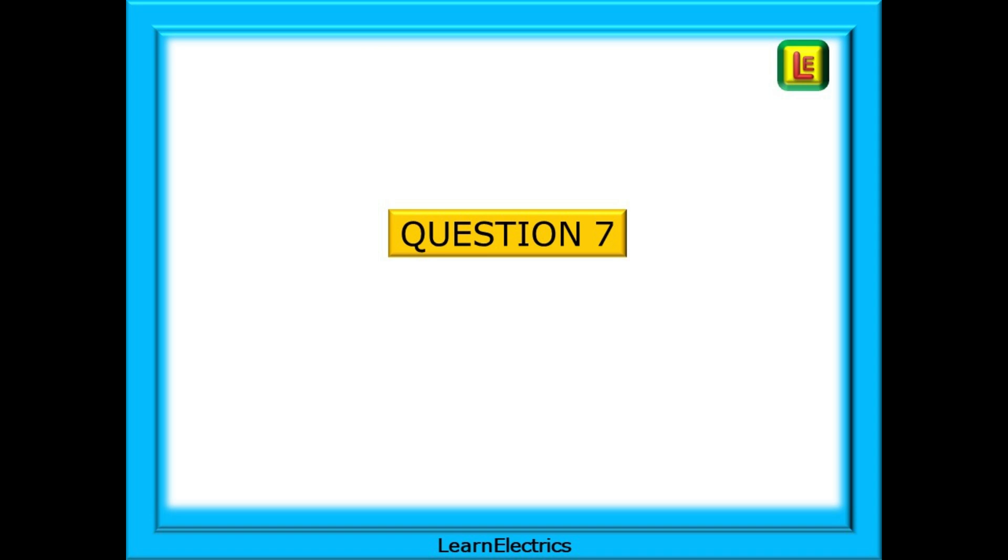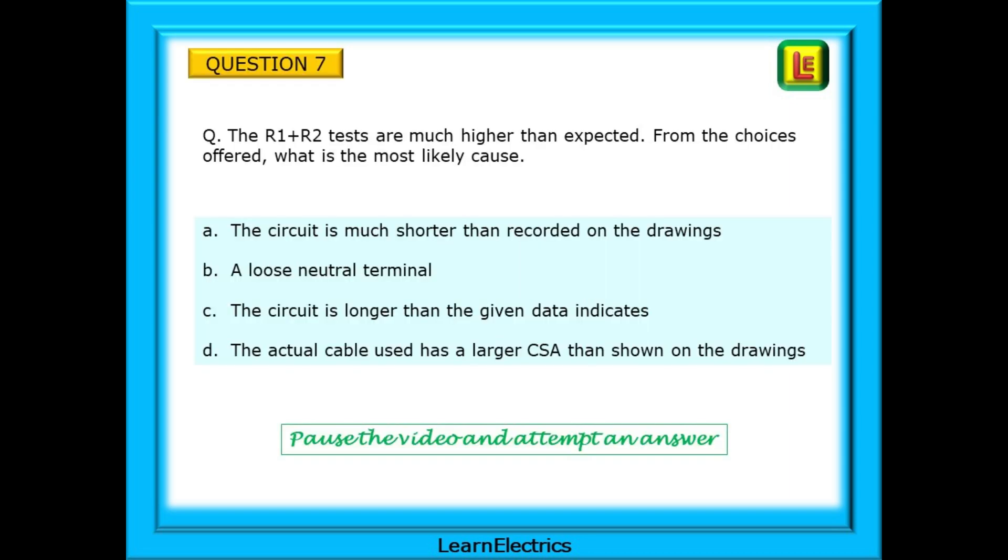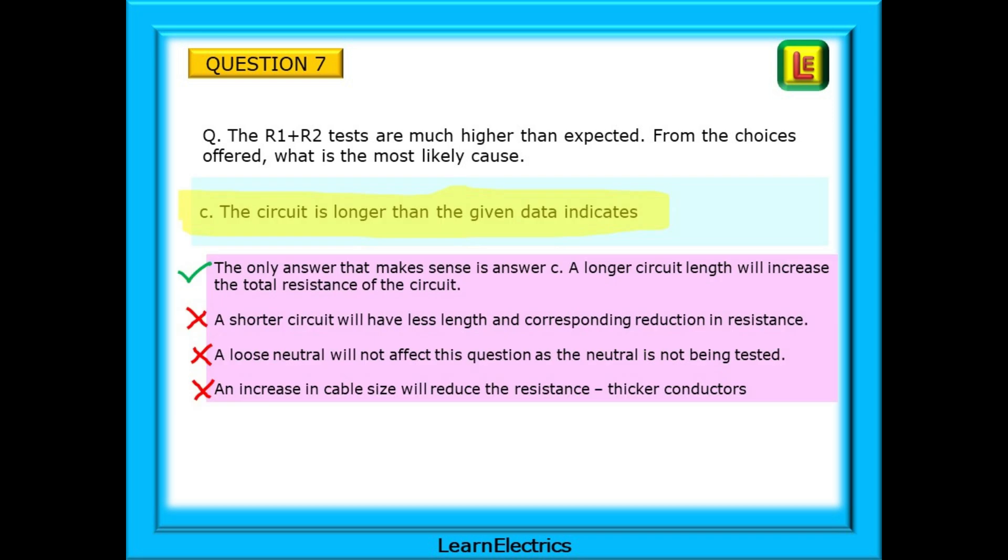Question 7 is waiting for us now. Using what we know about conductor resistances, have a go at this one. The actual R1 plus R2 tests, when measured, are much higher than expected. From the choices offered, what is the most likely cause? And we have been given four choices. Pause the video, read each possible answer and then choose the appropriate answer. Answer C is the only choice that will fit what this question is asking. This question is assuming that there is nothing wrong with the circuit installation. It is fault free. The only answer that makes sense is answer C.